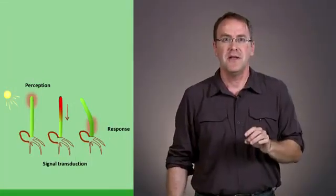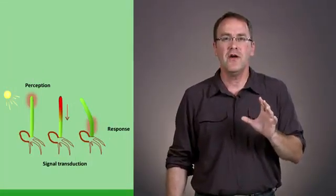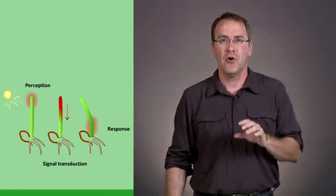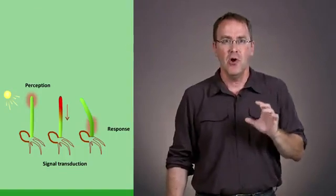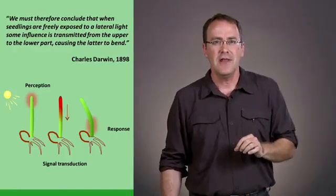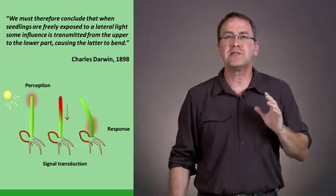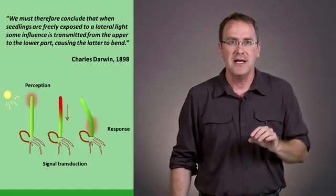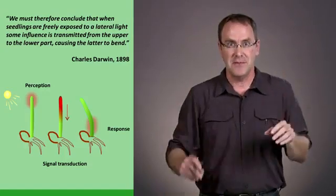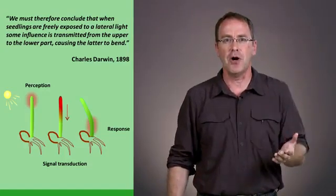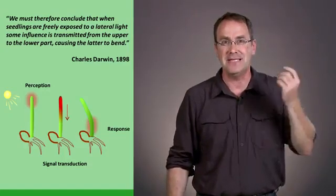But we haven't talked about what's causing the bending. If you remember, Darwin concluded from his phototropism experiments that there was a signal moving from the tip to the base. As he wrote in his book, we must conclude that when seedlings are freely exposed to lateral light, some influence is transmitted from the upper to the lower part, causing the latter to bend.